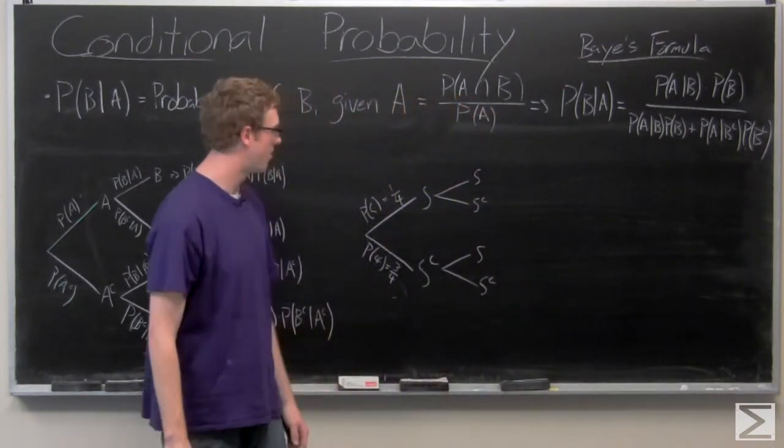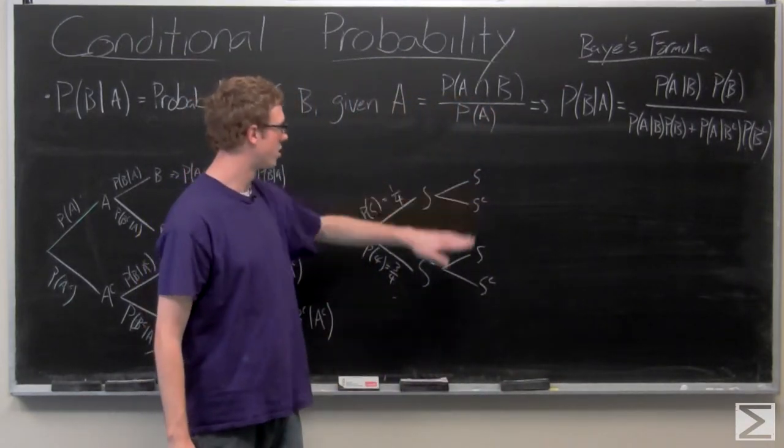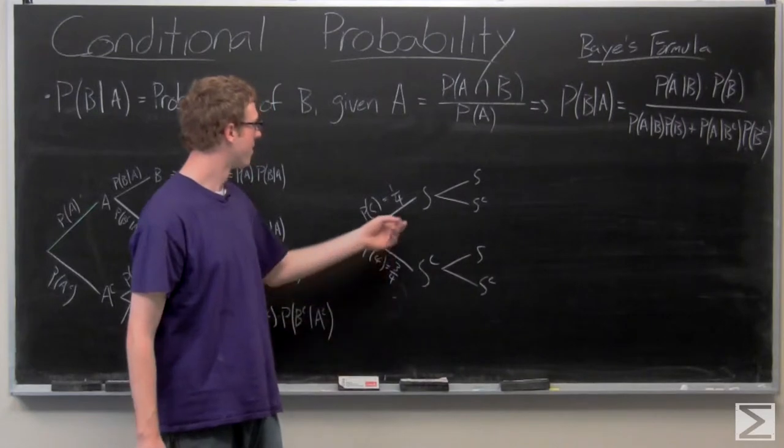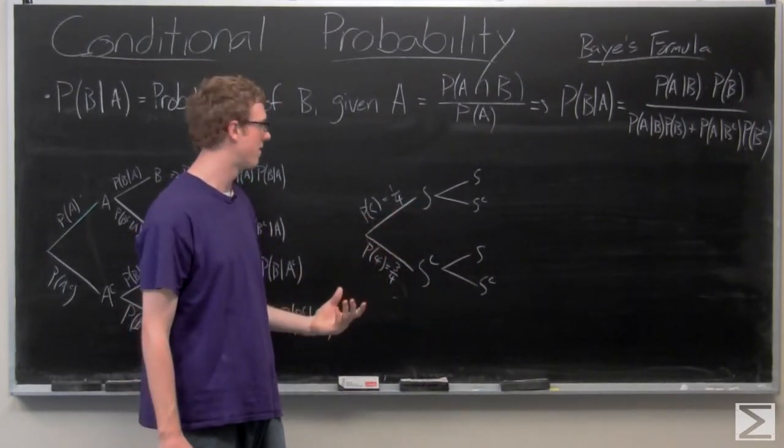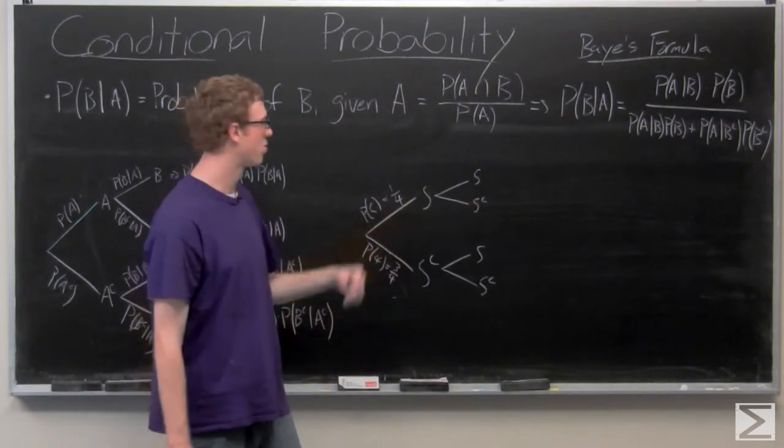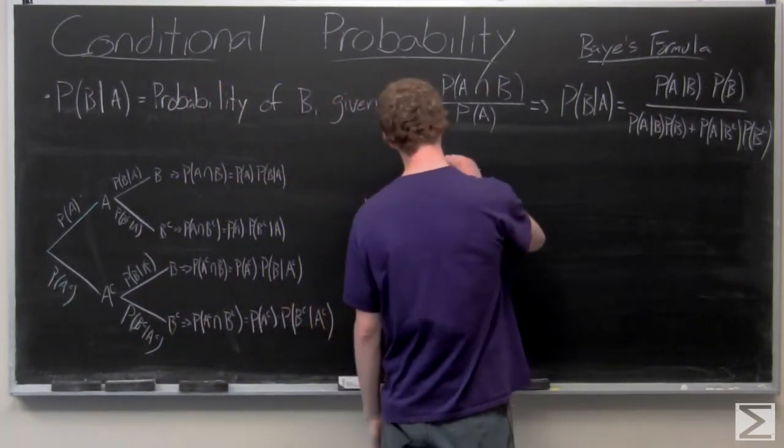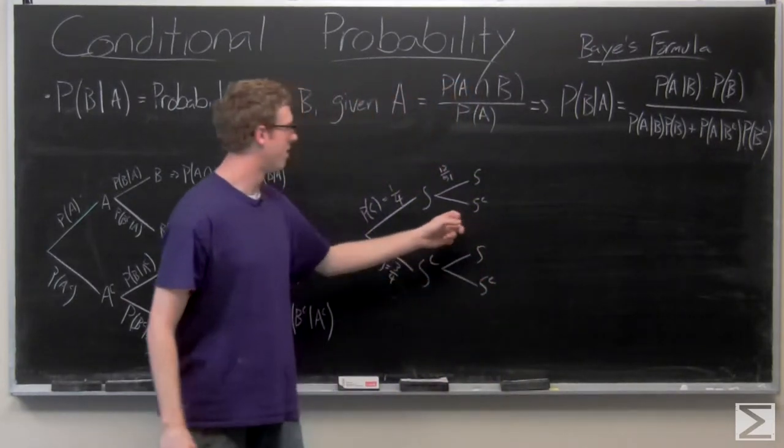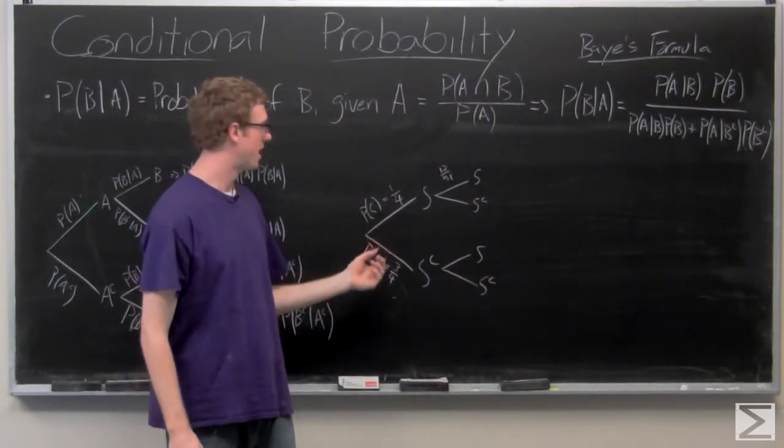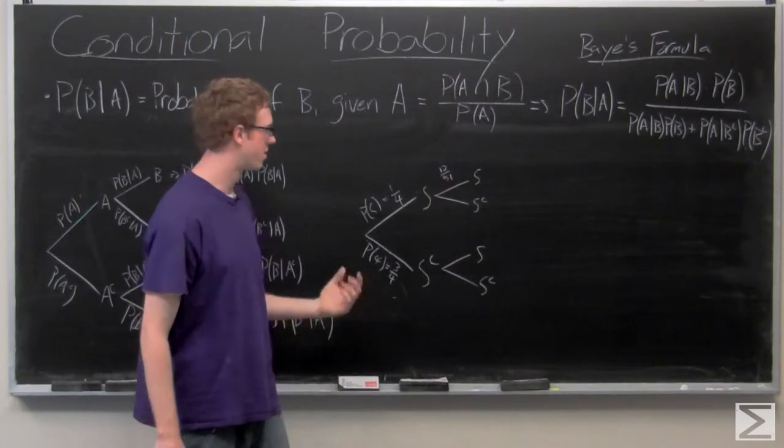So here are your second card possibilities, another spade or not a spade. So if we do draw a spade on the first one, that means there's only 12 spades left in the deck out of 51. So we have a 12 out of 51 chance. This one is a spade and then not a spade. So it's 39 out of 51.